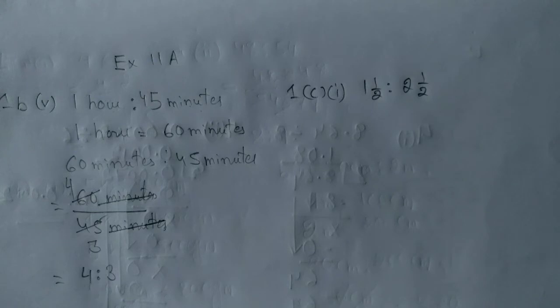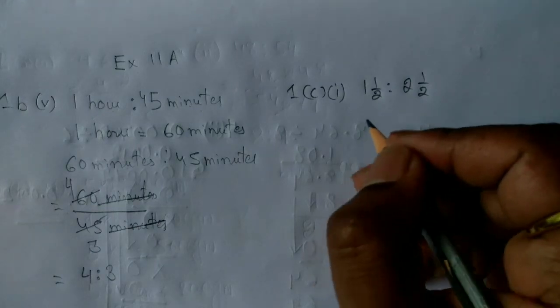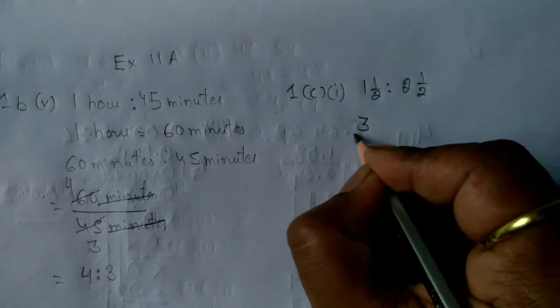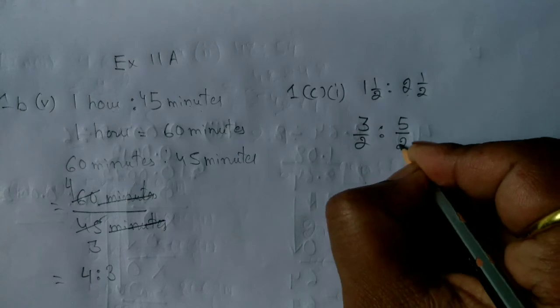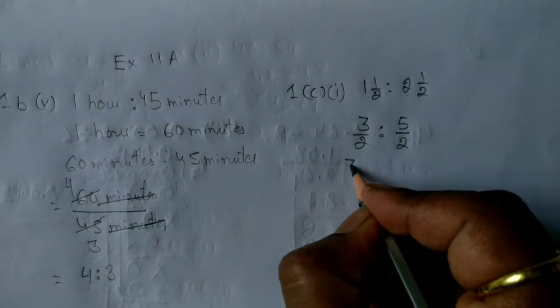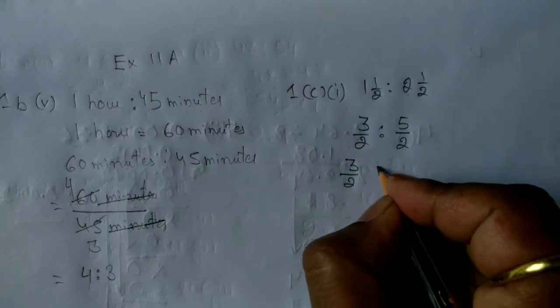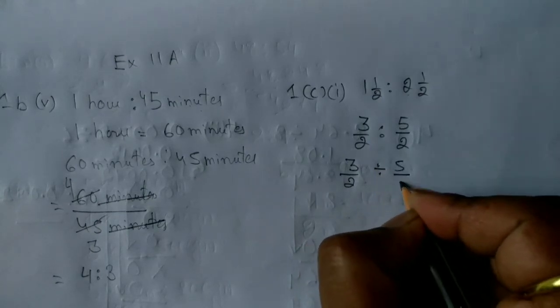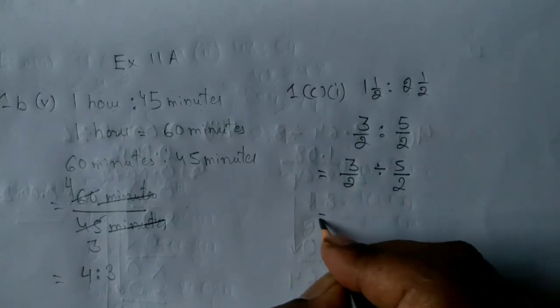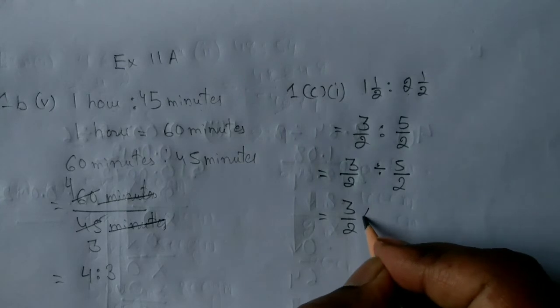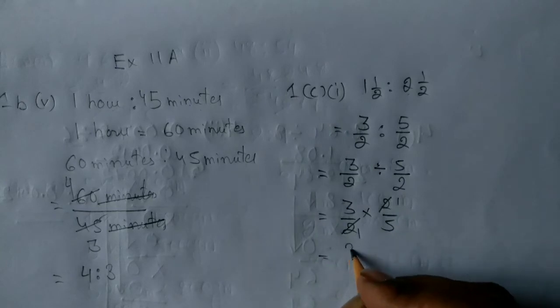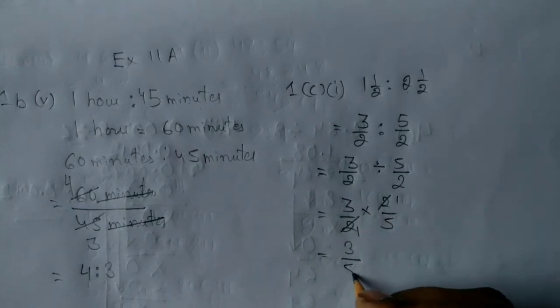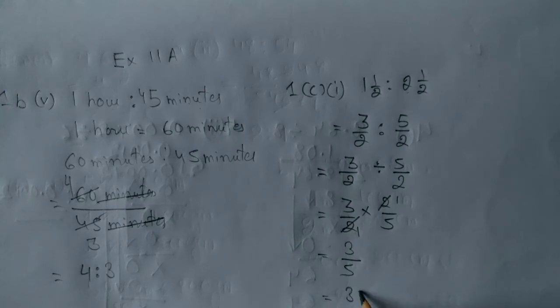In this case, what you are supposed to do is first convert the mixed fraction into improper fraction. So 2 into 1 is 2 plus 1, that is 3 upon 2 is to 2 into 2 is 4 plus 1, that is 5 upon 2. Now I can write this as 3 upon 2 divided by 5 upon 2, because the ratio also means division. So this will be equal to 3 upon 2 multiplied by 2 upon 5. Now 2 and 2 gets cancelled, and our answer will be 3 is to 5.